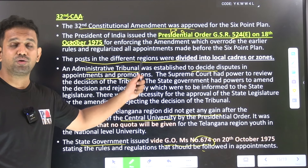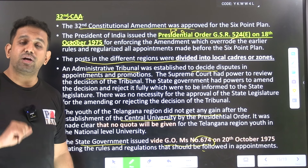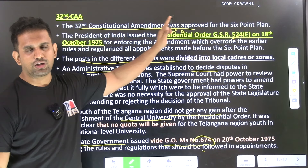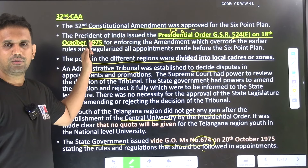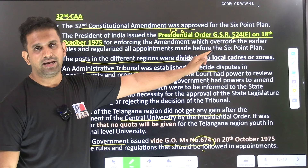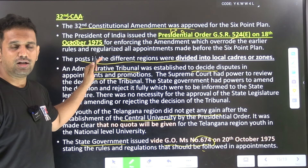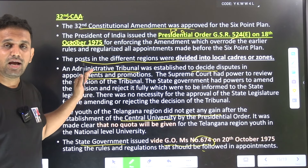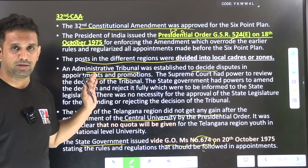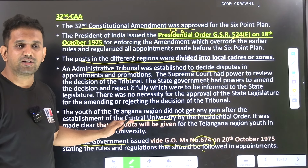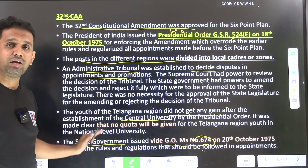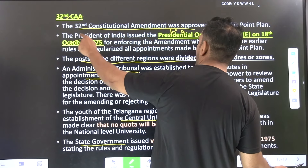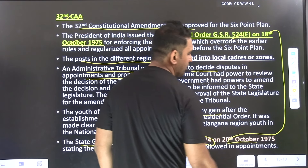To summarize: the 34th Amendment gave constitutional status to the Six Point Formula; the President issued Presidential Order on 18th October 1975; United AP was divided into six zones — four for Andhra, two for Telangana; the Administrative Tribunal was established with the state government supreme over its orders; the central university was of no use to Telangana people; and G.O. 674 was issued on 20th October 1975 to give effect to the presidential order.